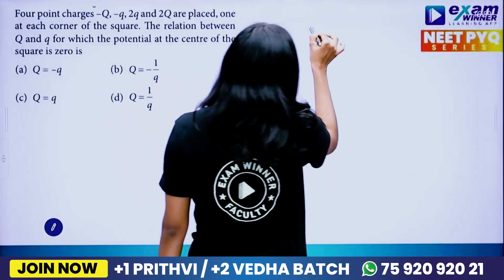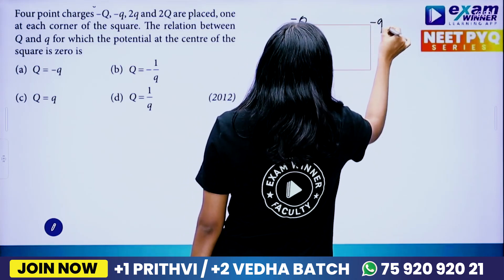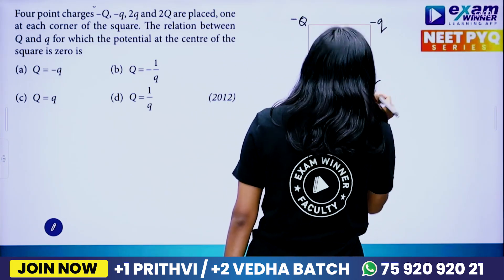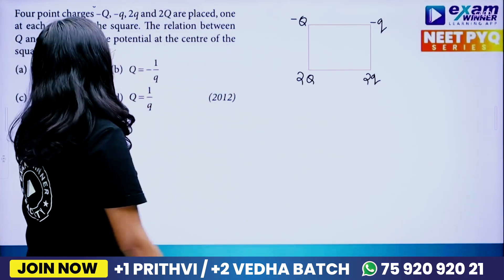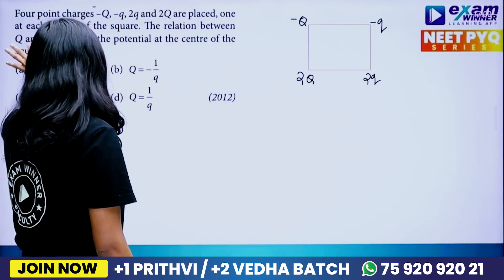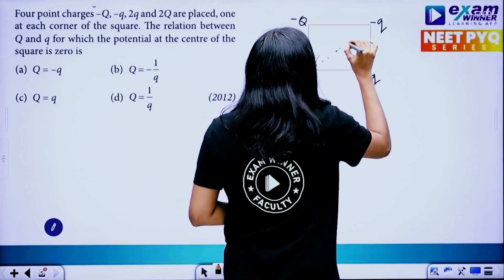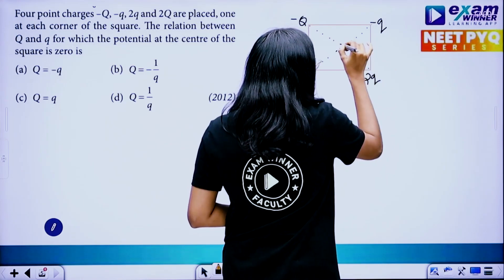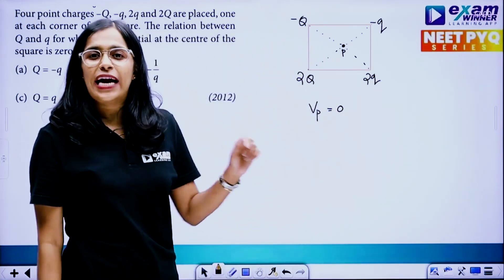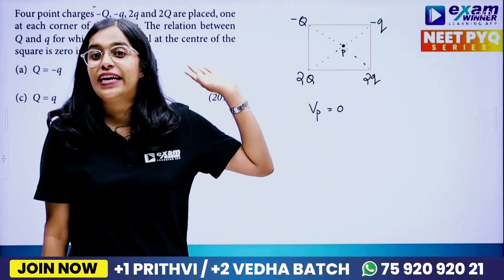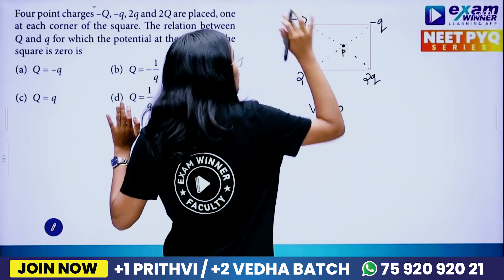Four point charges — minus capital Q, minus Q, minus small q, and 2Q — two capital Q are placed at each corner of a square. We need to find the relation between capital Q and small q for which the potential at the center of the square is zero. The point P is at the center of the square, and the distance from each corner to the center is L.